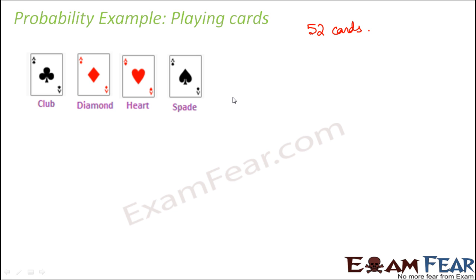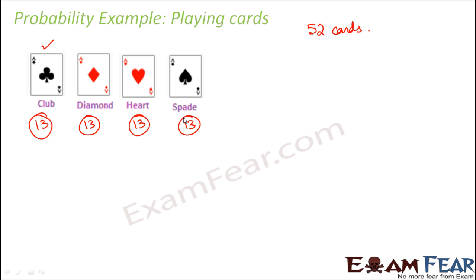These are the only 4 types of cards in a pack of 52 cards. You might ask why we have 52 cards — that's because each type has multiple cards. For example, in Club you would have Ace, 2, 3, 4, 5, 6, 7, 8, 9, 10, Jack, King and Queen. So in each type of card you have 13 cards. You have 13 cards for Diamond, 13 for Heart, 13 for Spade and 13 for Club — and all of them would have a King, a Queen, a Jack, an Ace and so on.